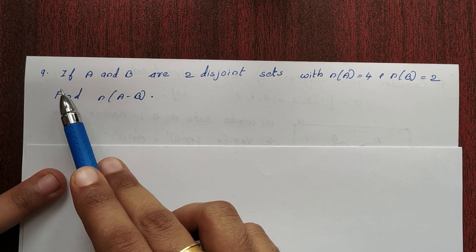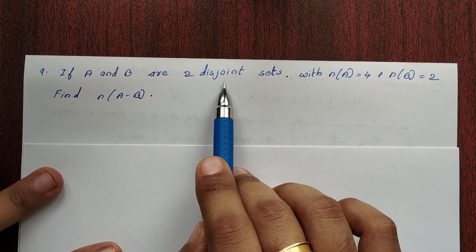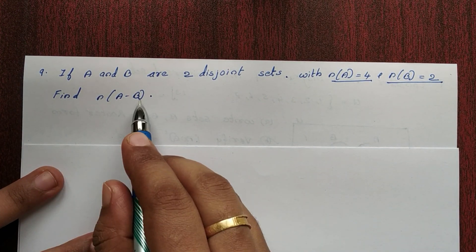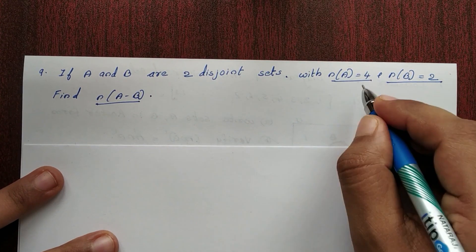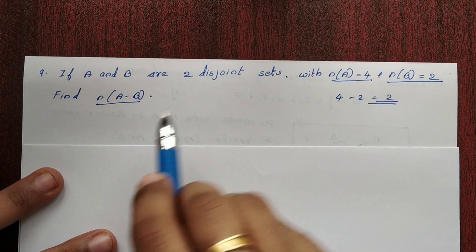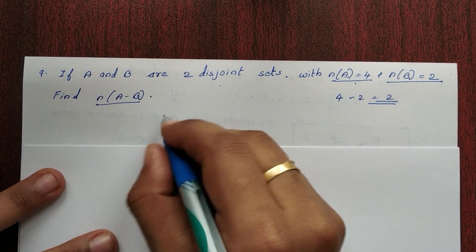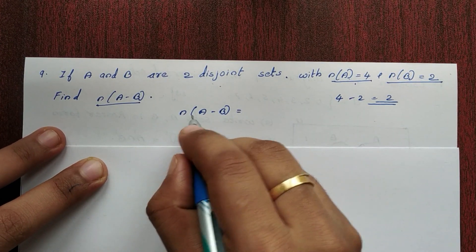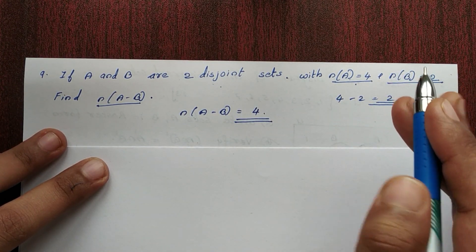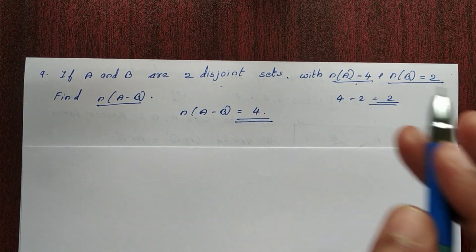Next question — the 9th question. If A and B are two disjoint sets, find the number of elements in A minus B. Disjoint sets have no common elements. The number of elements in A minus B equals the number of elements in A, which is 4. We will see this in more detail in another video.